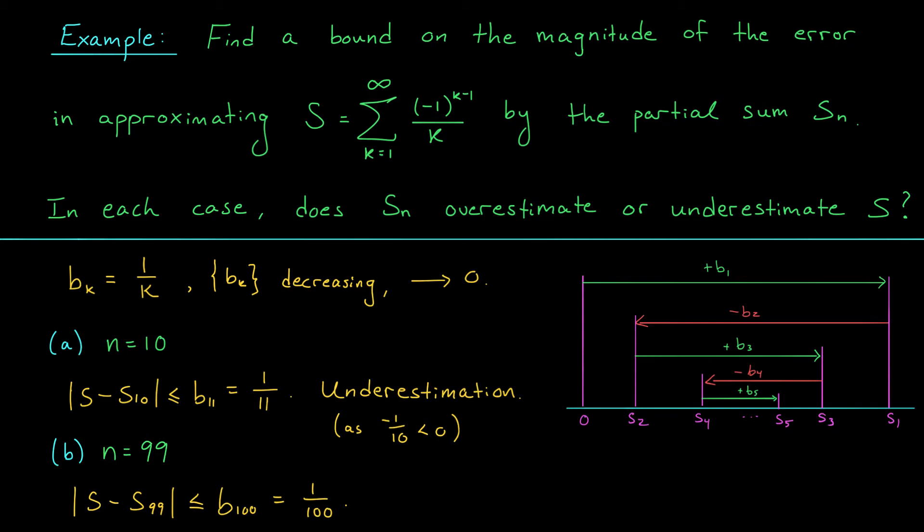Finally, is S99 an overestimation or an underestimation to S? Well, when we add in our final term, 1 over 99, a positive quantity, we're going to end up on the right side of the true value of S. So S99 is going to be an overestimation since the final term is positive.